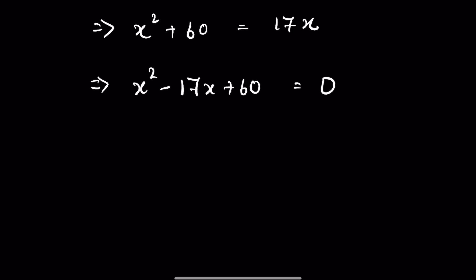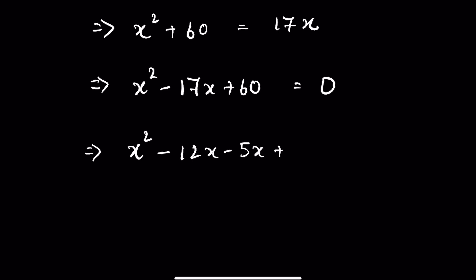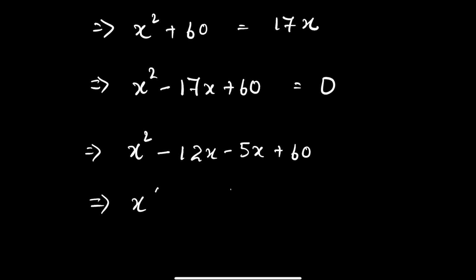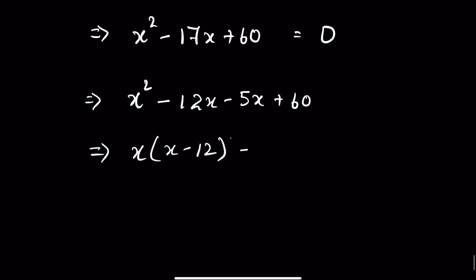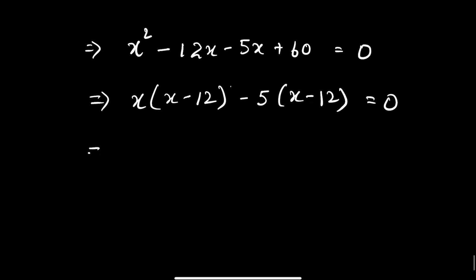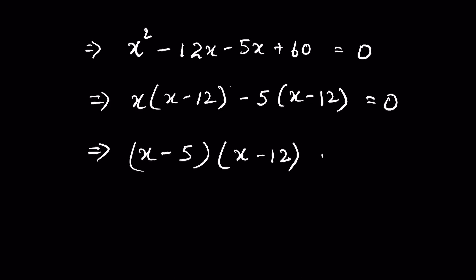This is a quadratic equation we can factorize. We write X squared minus 12X minus 5X plus 60, since minus 12 times minus 5 is 60 and minus 12 plus minus 5 is minus 17. So we get X times X minus 12 minus 5 times X minus 12 equals 0, giving the factors X minus 5 and X minus 12 equal to 0.